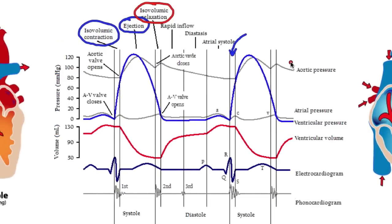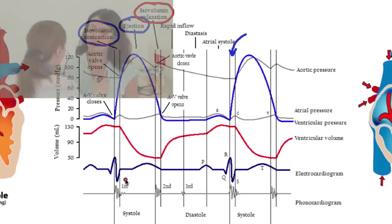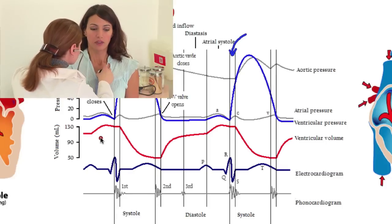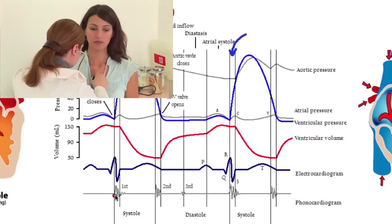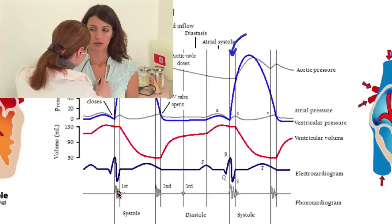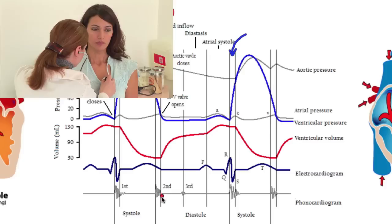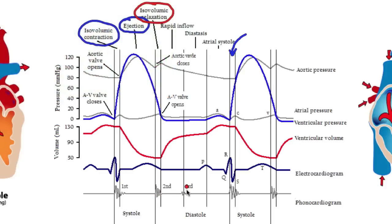Now there's one thing we haven't looked at yet — the phonocardiogram. You can see here we have a signal, a second signal, a third signal, and actually even a fourth signal. What this represents are the sounds of the heartbeat. When you listen to the heartbeat, you usually hear a lub-dub sound. What that refers to would be the first and the second sound. There is a third sound and a fourth sound, but you don't hear those because they're not strong sounds.